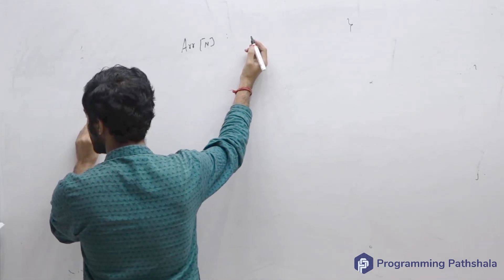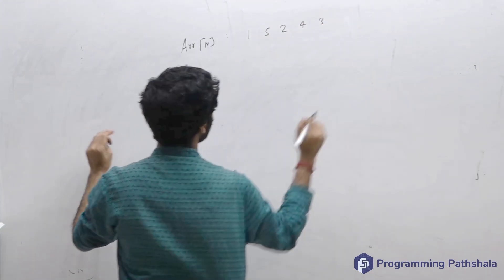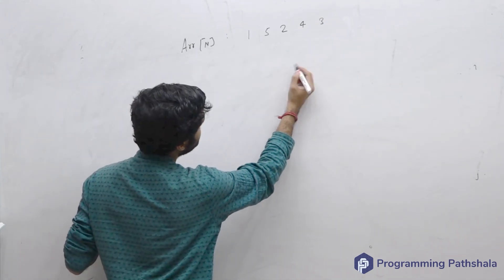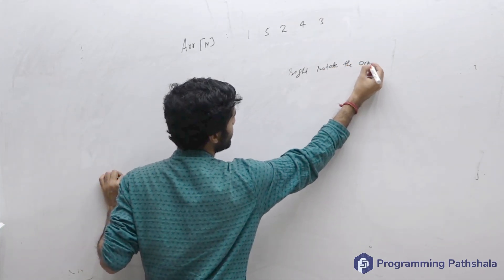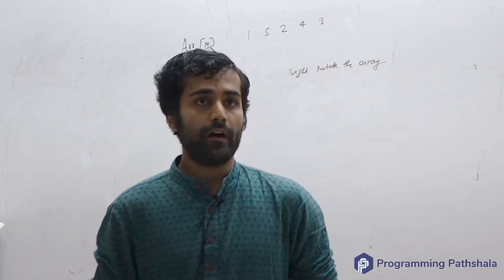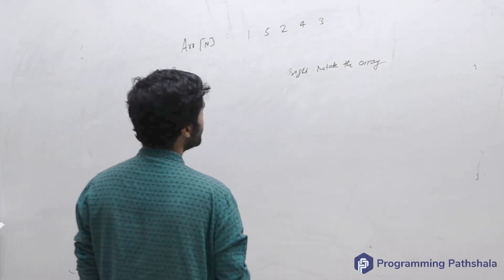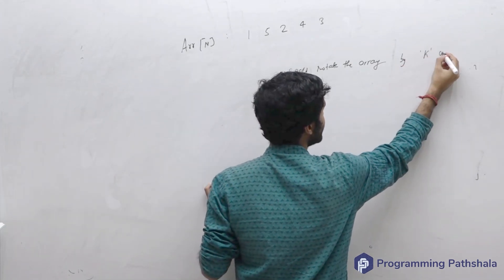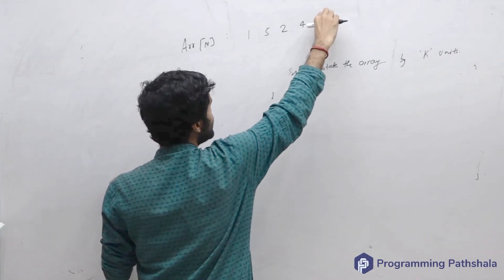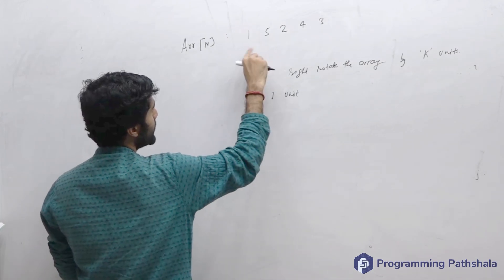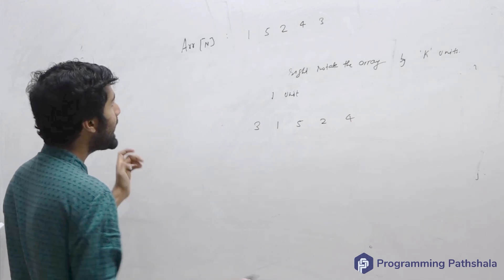Let's say the array contains 1, 5, 2, 4, and 3. Now let's say I have to right rotate the array. What is the meaning of right rotation? When you rotate something by k units, right rotating by one unit means that you pick the last element and bring it to the front.